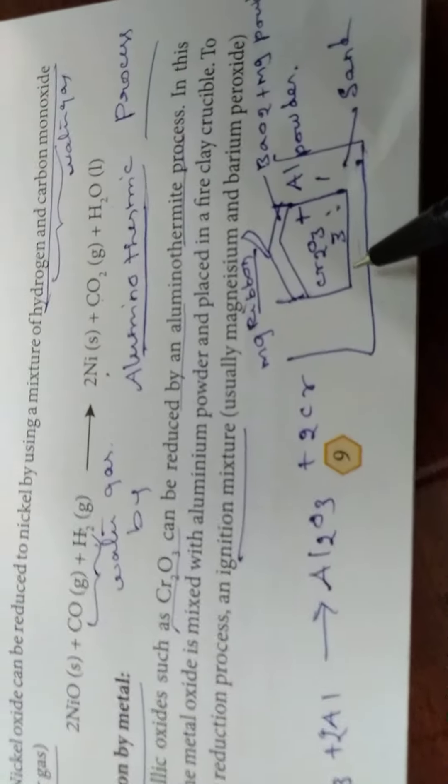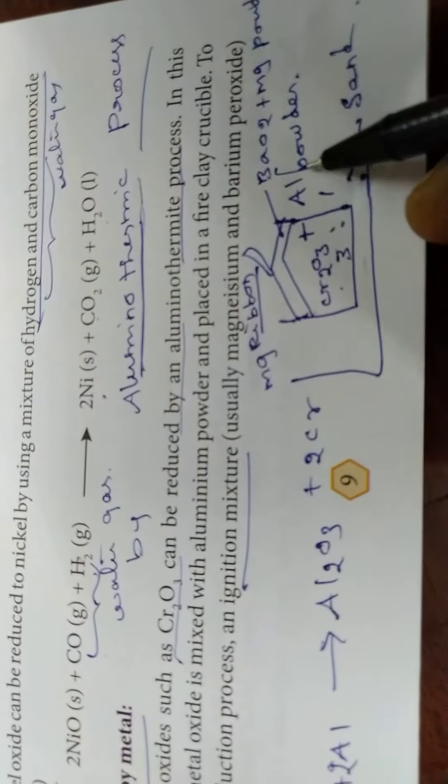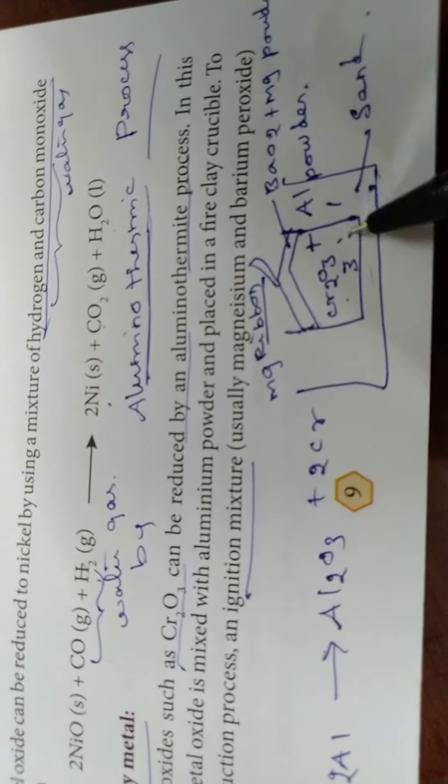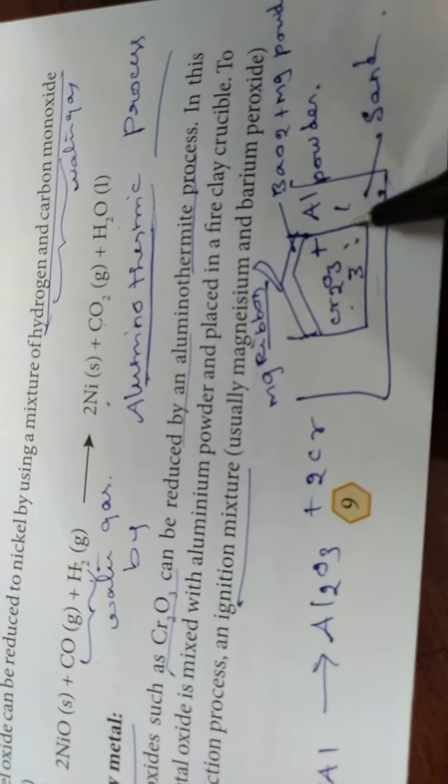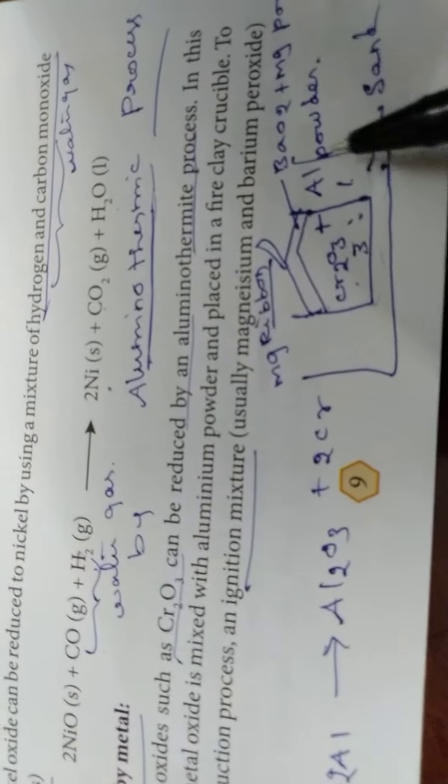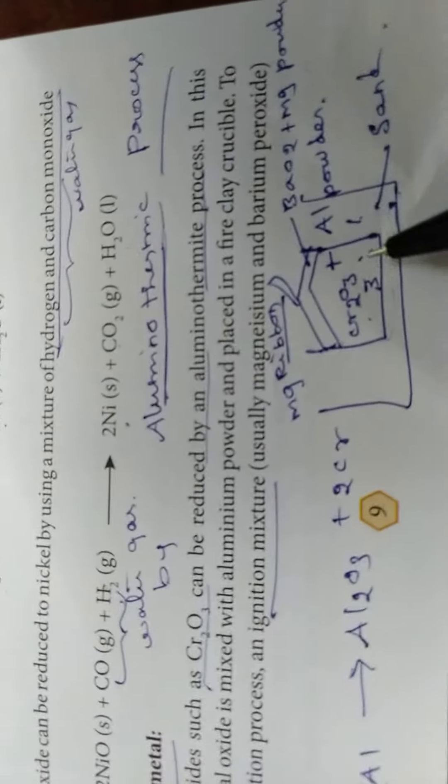So in this diagram you see, Chromic Oxide and Aluminium Powder is taken in the ratio of 3:1 in a fire clay crucible.